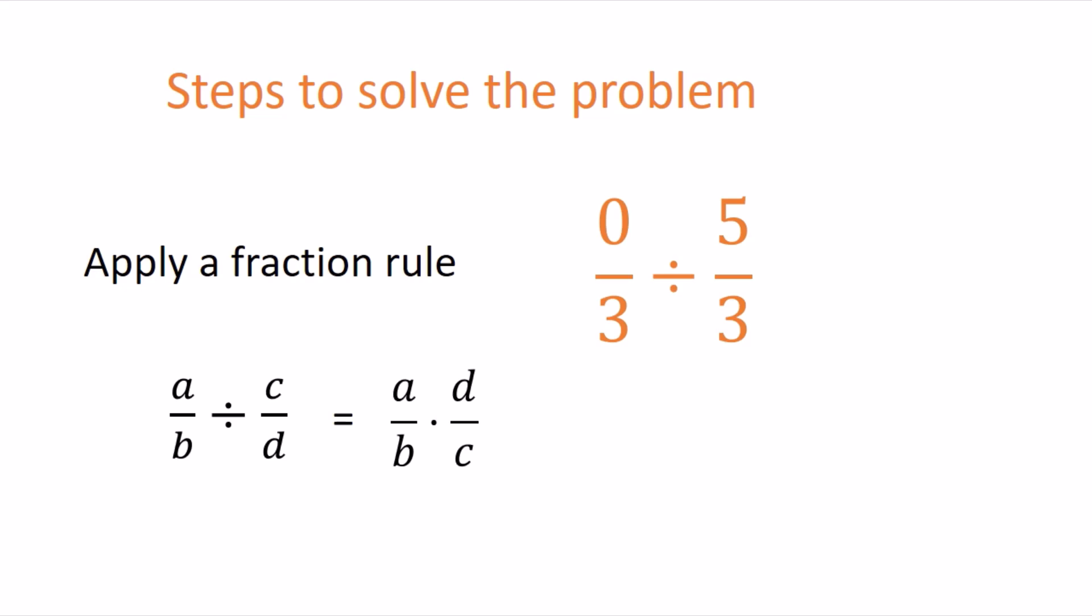When you have a division and you have it in the form of a/b ÷ c/d, what we do actually, we look at the right side, c and d, and we turn it into multiplication.